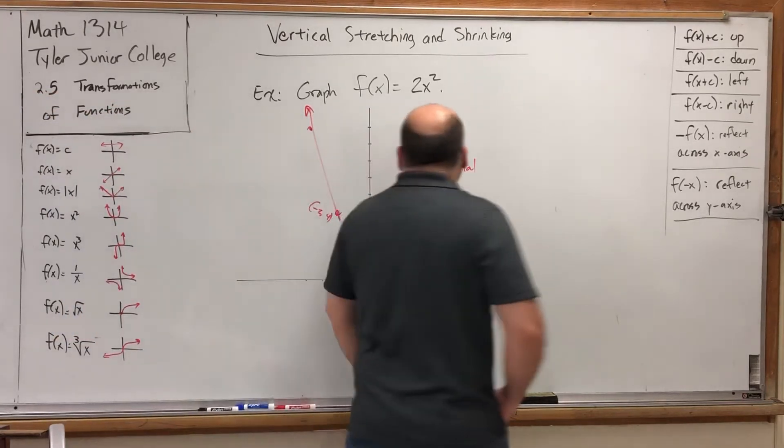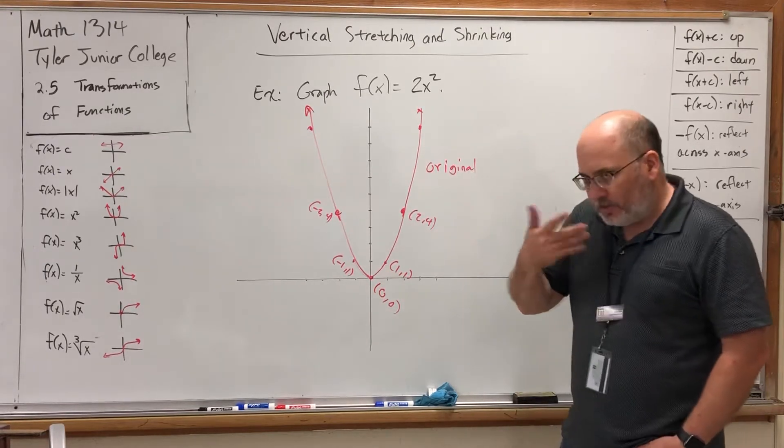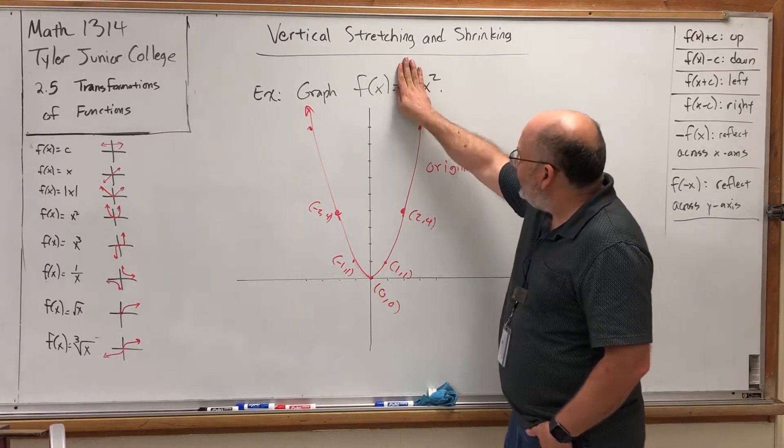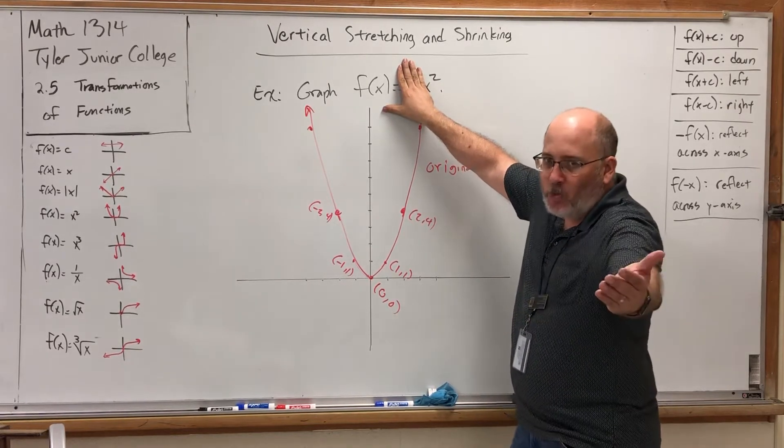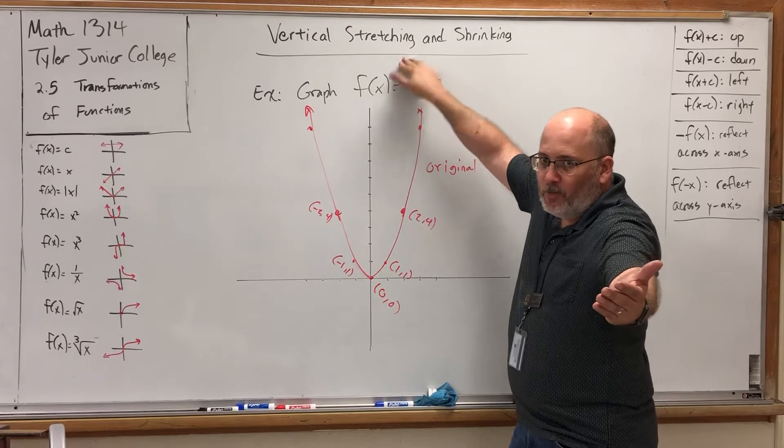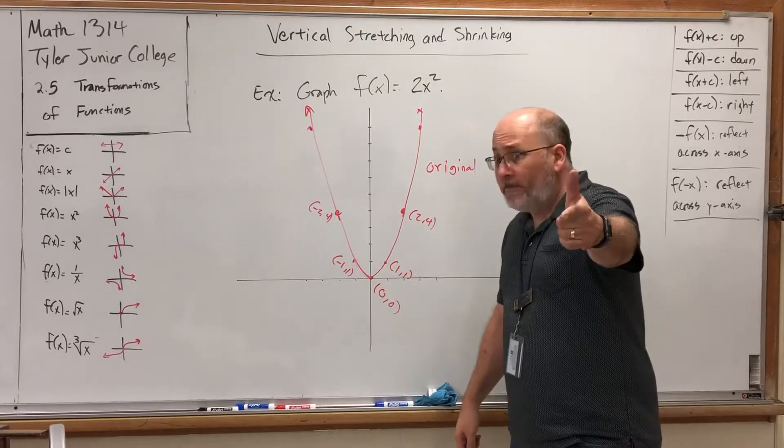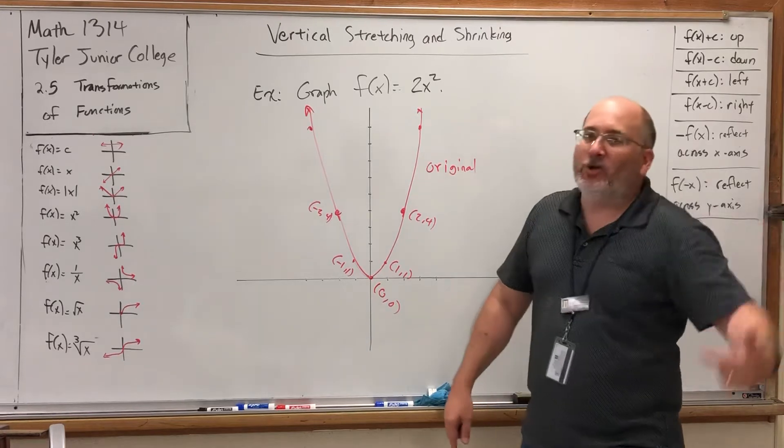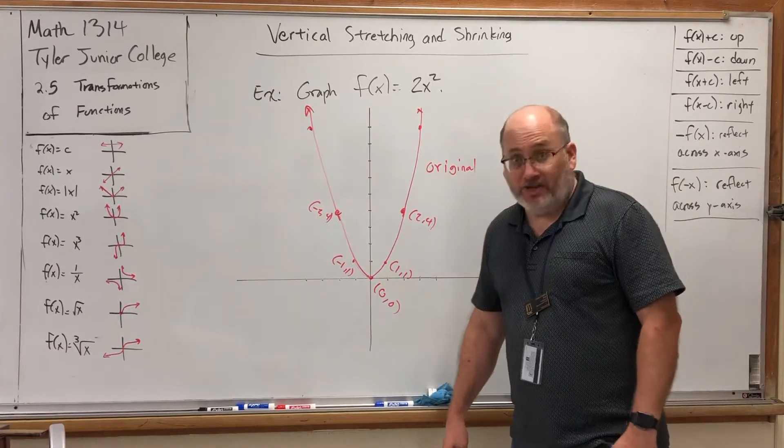So, what effect will this 2 have that we're multiplying in front of the function? Well, think of this in terms of inputs and outputs. Without the 2, the function says, give me a number, I'll square it, there's your y value. But with the 2, the function says, give me a number and square it, but before I hand it off and call it the y value, I'm going to double it.